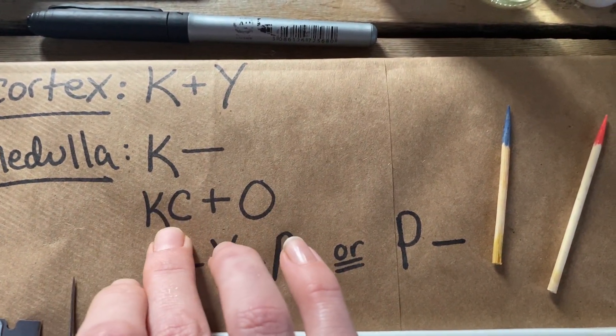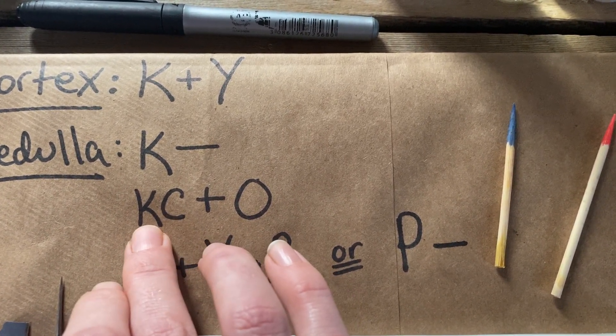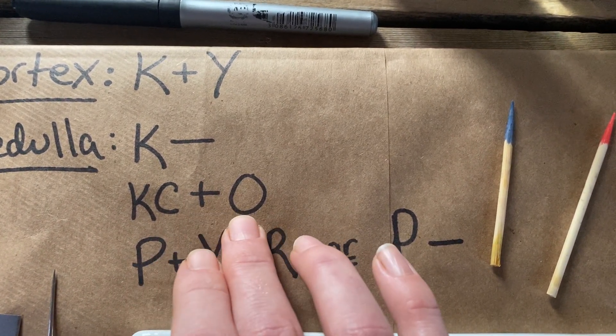If I use the K test combined with the C test, which is often used, it's just a drop of K quickly followed by a drop of C, I will see a color change, and that color change will be orange.